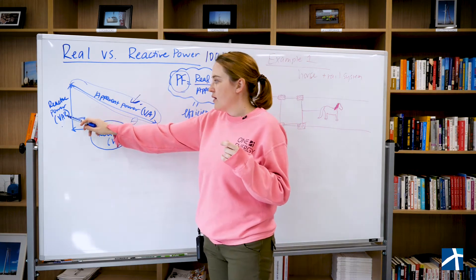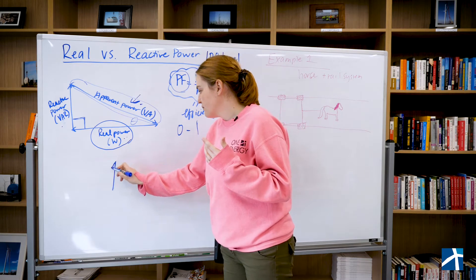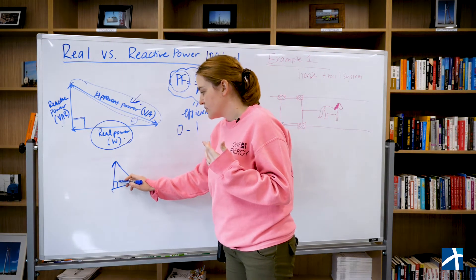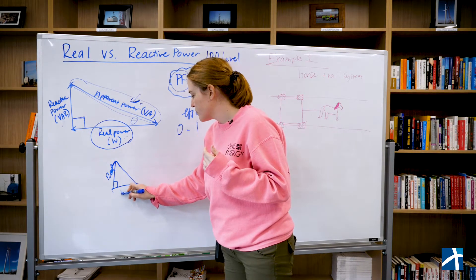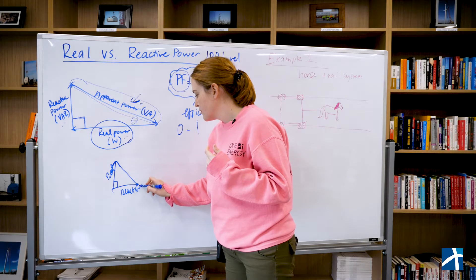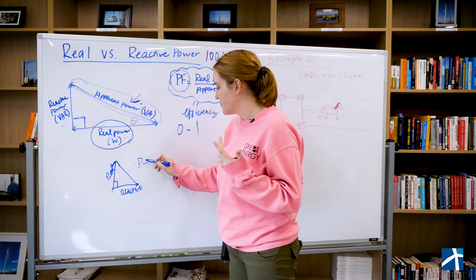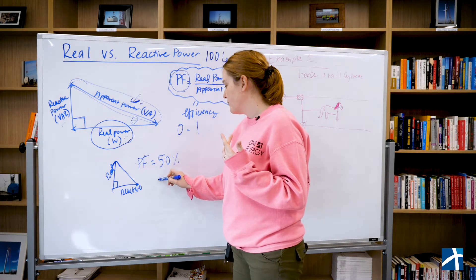If you have 50% reactive and it looks more like a square where these two legs are the same, real and reactive, then this power factor is going to be 50% or 0.5.